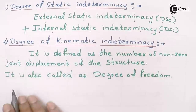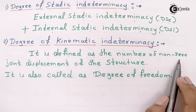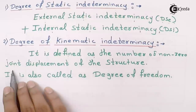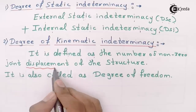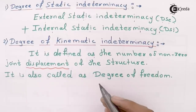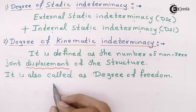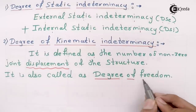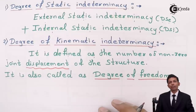Now the second type is degree of kinematic indeterminacy. It is defined as the number of non-zero joint displacements of the structure. This point is very important. It is also called the degree of freedom.